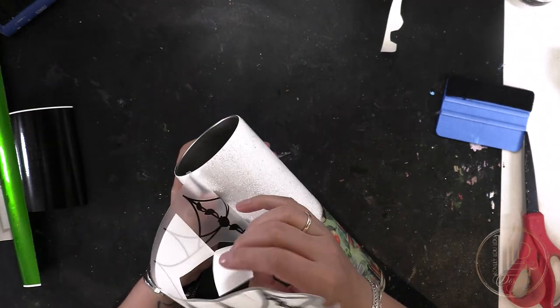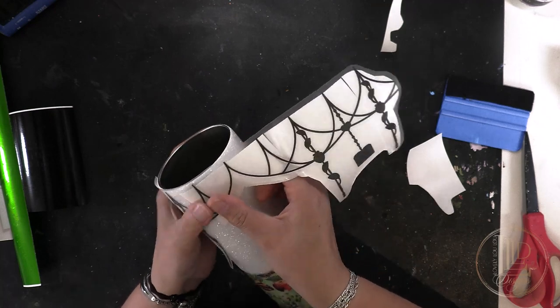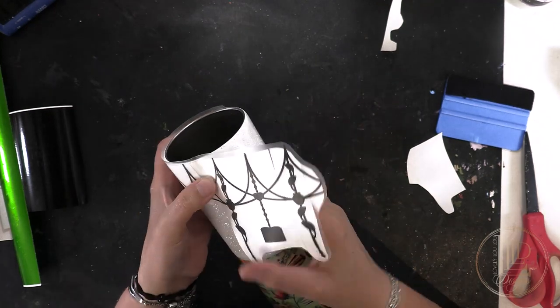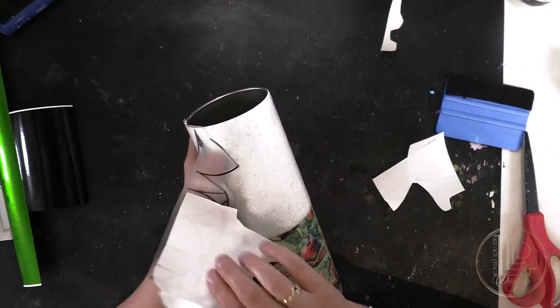When I'm satisfied, I remove one section of the backing paper and apply the vinyl in that section. Then I check my placement again and repeat the process, working one section at a time. This allows me to make small corrections as I go.